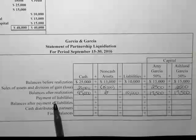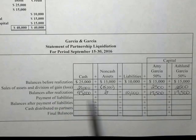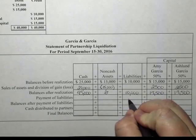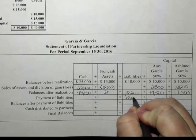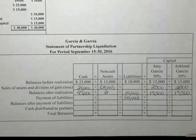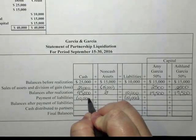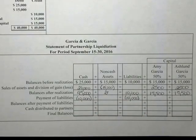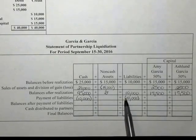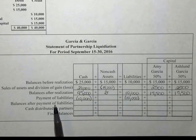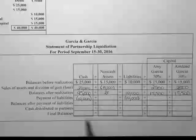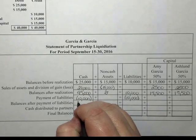The next step is to pay the liabilities. The liabilities are $10,000, so we are going to take $10,000 from the liabilities and $10,000 from cash. That represents the payment of the $10,000 liability.